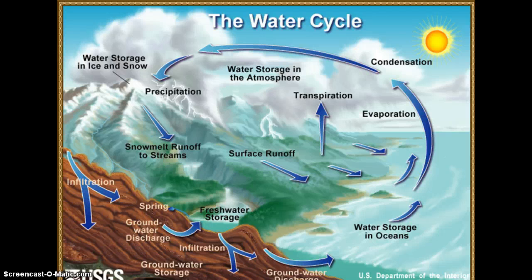Recall that water is always changing states between solid (ice), liquid, and gas vapor. Several important steps in the water cycle include condensation, precipitation, evaporation, transpiration, and other flow paths. Condensation is where atmospheric water vapor is changed into liquid water, and this step is crucial in the hydrologic cycle because it is responsible for the formation of clouds.